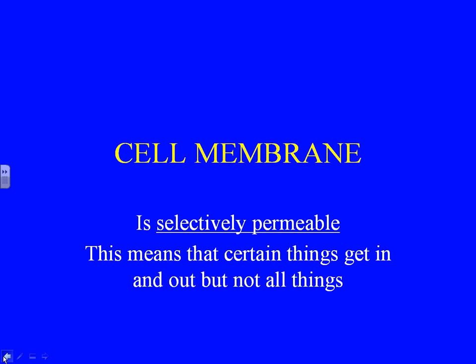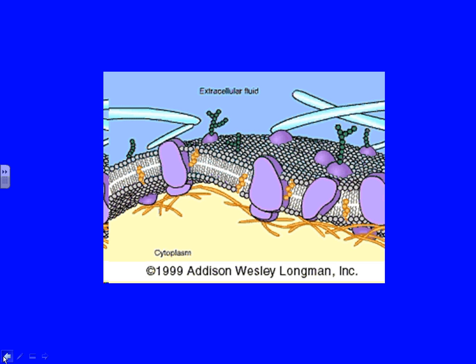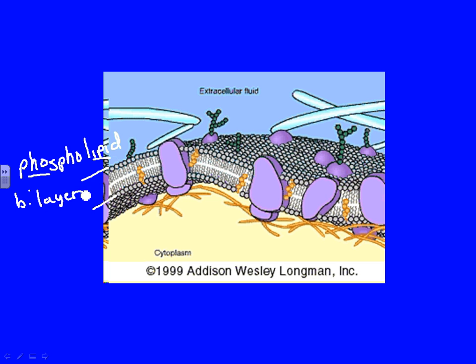The cell membrane works in kind of the same way. Let's take a look at the cell membrane and talk about some of its parts. This is a diagram out of almost every high school and college textbook — this is what we're pretty sure the cell membrane looks like. The cell membrane is made mostly of a double layer called the phospholipid bilayer.